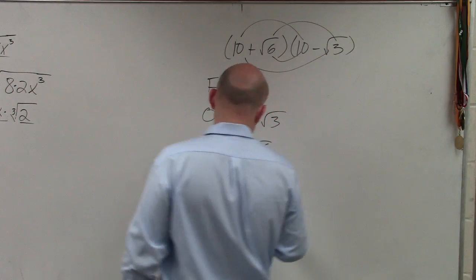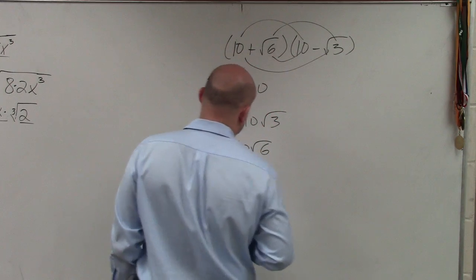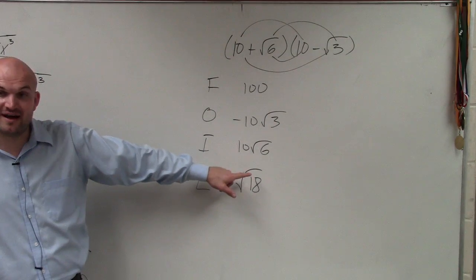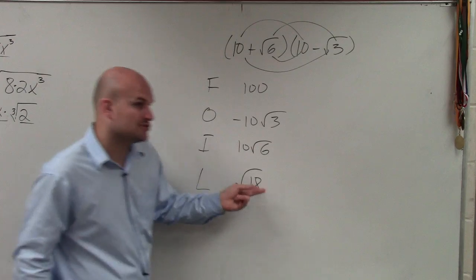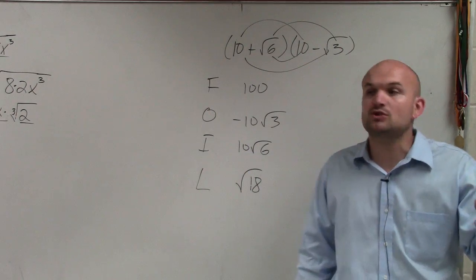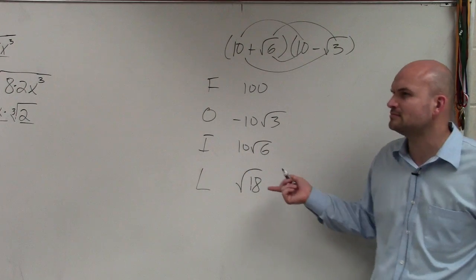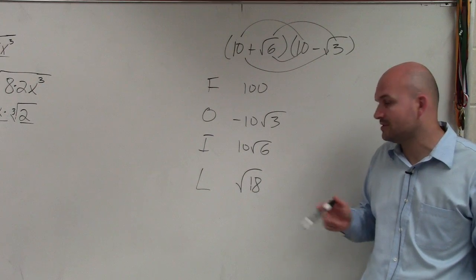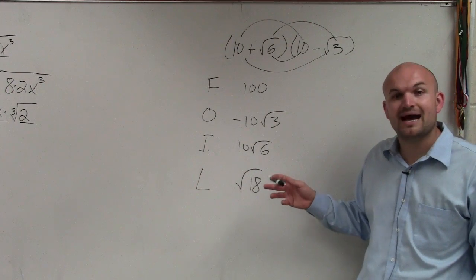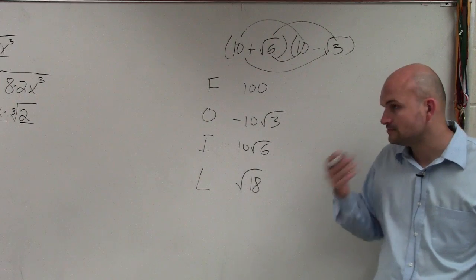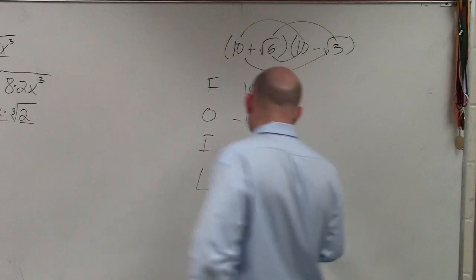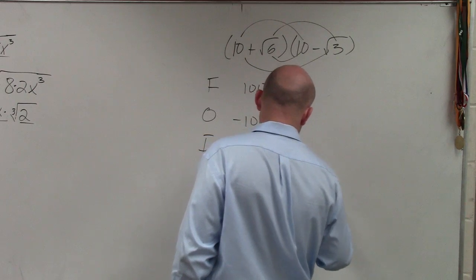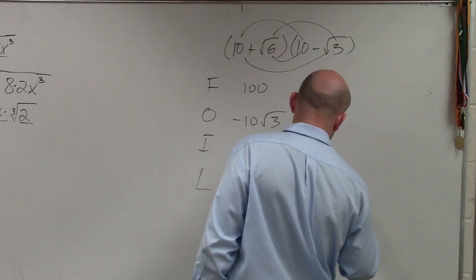So square root of 6 times square root of 3 is going to be the square root of 18. Now I need to simplify this. Is there a perfect square that divides into 18? Yes — 9. 9 goes into 18 two times. So I can rewrite this as square root of 9 times 2, which is really 3 times square root of 2.